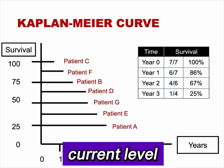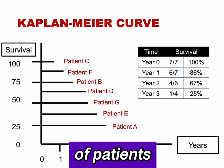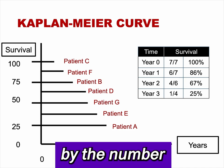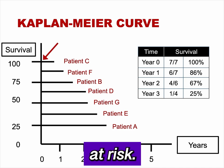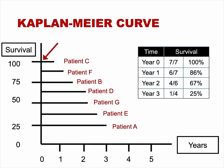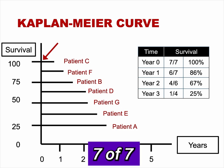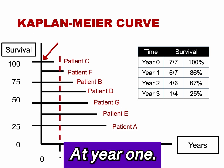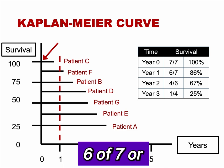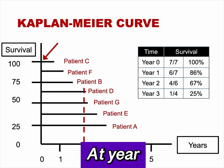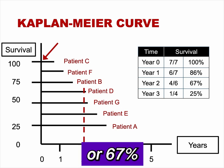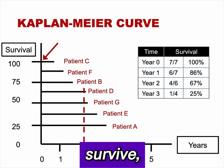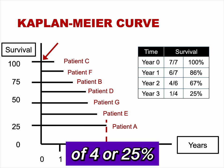Survival at the current level is calculated as the number of patients surviving divided by the number of patients at risk. At year 0, 7 of 7 — or 100% — of the patients are alive. At year 1, 6 of 7, or 86%, survive. At year 2, 4 of 6, or 67%, survive. And at year 3, 1 of 4, or 25%, survive.